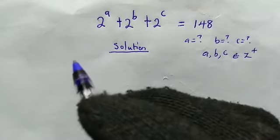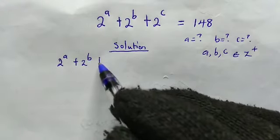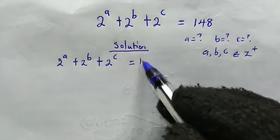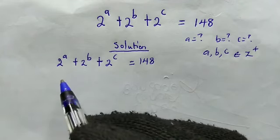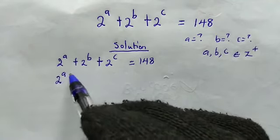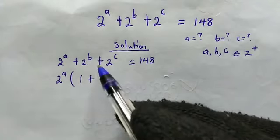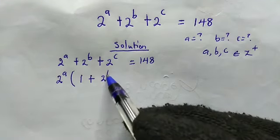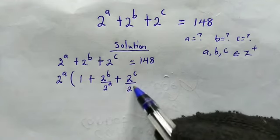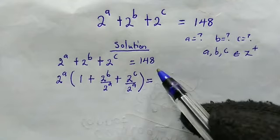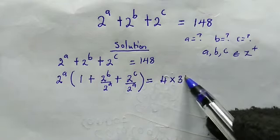Let's get started. We have 2^A + 2^B + 2^C = 148. From the left-hand side, let us factor out 2^A. So we get 2^A times the bracket: 1 plus 2^(B−A) plus 2^(C−A). And all of this equals 148, which is the same as 4 times 37.